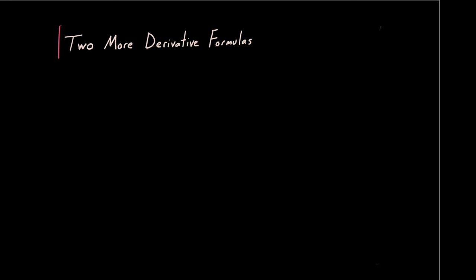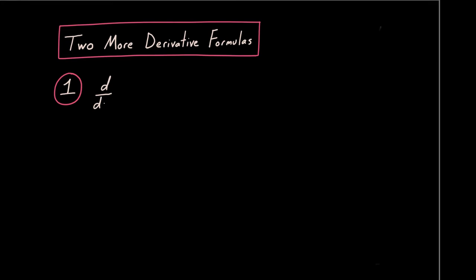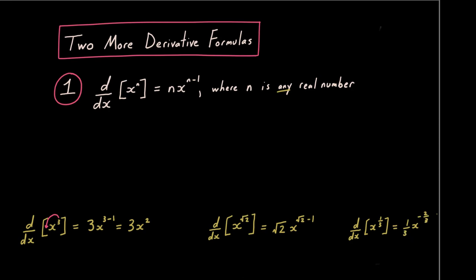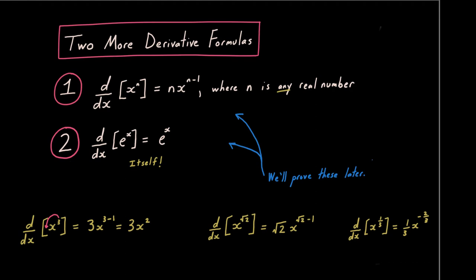Continuing our foray into derivative laws and formulas, here are two very important ones. The first is the power rule: the derivative with respect to x of x^n is n·x^(n−1), for any real number n. For example, d/dx[x³] = 3x², d/dx[x^√2] = √2·x^(√2−1), and d/dx[x^(1/3)] = (1/3)x^(−2/3). Our second formula: the derivative of e^x is just e^x itself. We'll prove these rigorously later, but let's have them in hand.